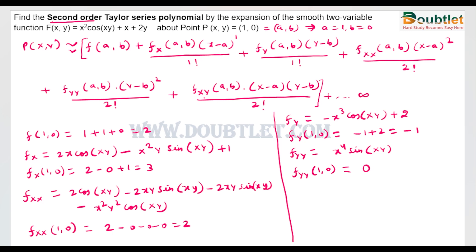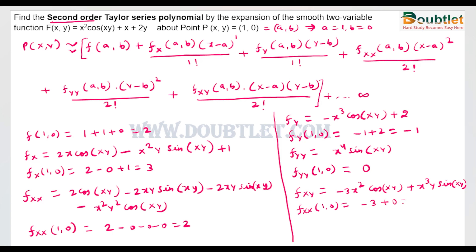Finally, we need fxy, the mixed partial derivative. We differentiate fy with respect to x, which gives −3x²·cos(xy) − x³y·sin(xy) + 0. Putting x = 1, y = 0 gives −3 − 0 = −3. So fxy(1, 0) = −3.